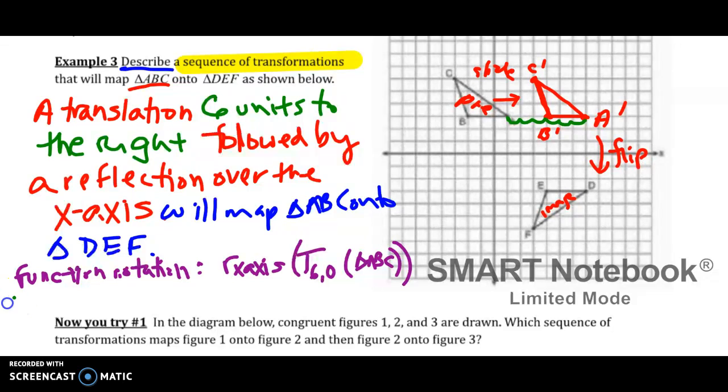Our other notation is composition. Again, neither of these notations were required. If you're like Ms. Gallo, I'm good with the description, then just use the description. That's fine. Again, what came second was the reflection over the x-axis. According to my description, your description may be different. And what came first was the translation six units to the right, zero in the y. Again, on triangle ABC.